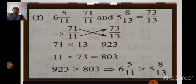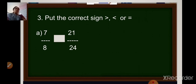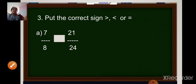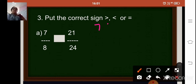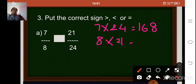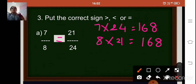The next sum asks you to put the correct sign — greater than, smaller than, or equal to. Compare 7 upon 8 and 21 upon 24 using the cross multiplication method. Cross multiply: 7 into 24 gives 168, and 8 into 21 also gives 168. Since the products of the first fraction and the second fraction are the same, you put the equal to sign: 7 upon 8 is equal to 21 upon 24.